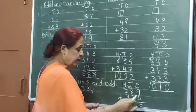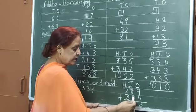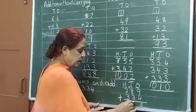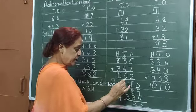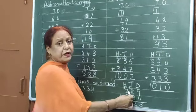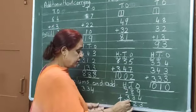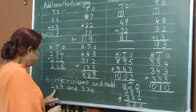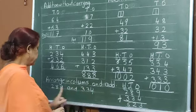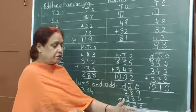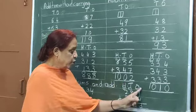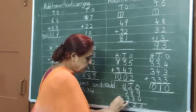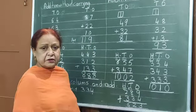Carry 1. 8 plus 3 is 11, and 1 is 12 — carry 1. 2 plus 3 is 5, and 1 is 6. Children, you have to arrange — some sums will be written in a line, but you have to arrange in columns: 1s, 10s, 100s. Then put the sign of addition and do the sum.